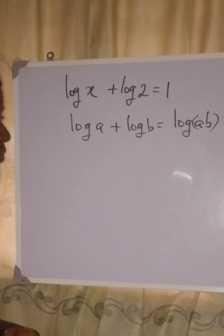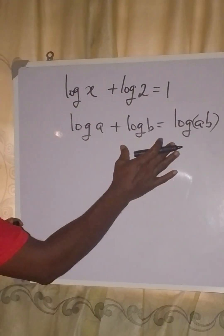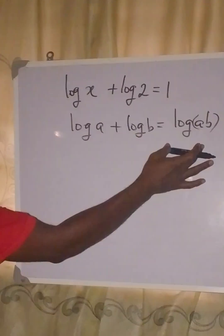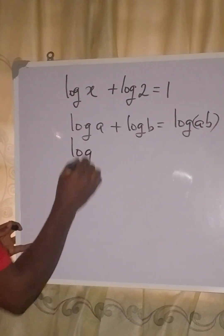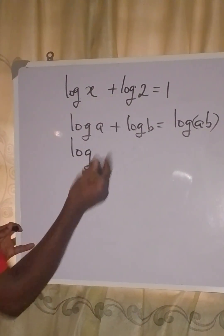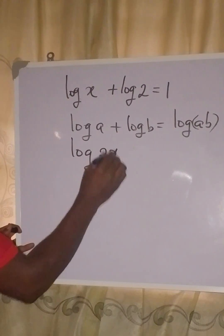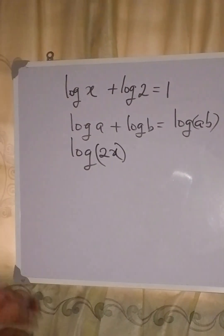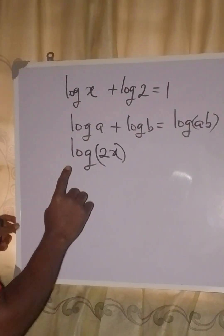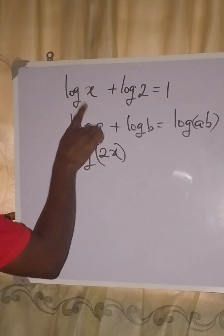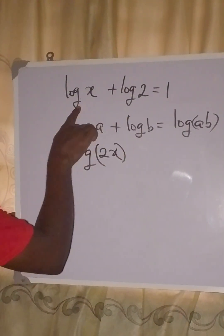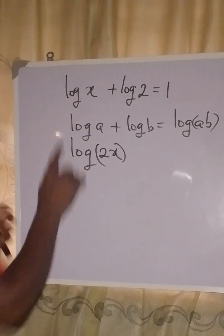Log a times b is the same thing as log ab. From here we can now write this in this form, so we have log x times 2, and that will be log 2x. If you like, you can have this in bracket. Mind you, we can do this if they have the same base.